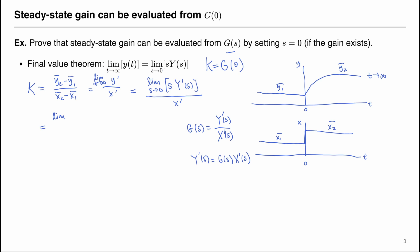Substitute that in. The limit as s goes to 0 of s multiplied by G(s) X'(s). Now what is big X prime of s? We know that the change in input in the t domain is u2 minus u1, which is our definition here. And then take the Laplace transform.